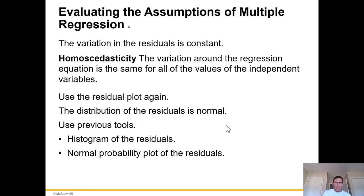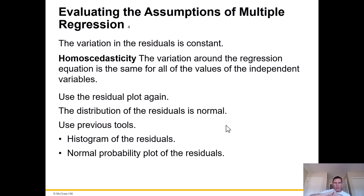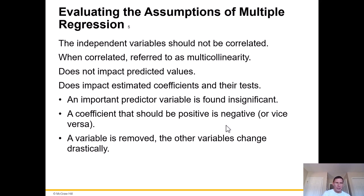The variation in the residuals should be constant — this is the idea of homoscedasticity. The variation around the regression equation should be the same for all values of the independent variables. Think of 'homo' meaning the same amount of variation all the way through the range. We can use a residual plot and look for a normal distribution of residuals — or use a histogram or other plots.